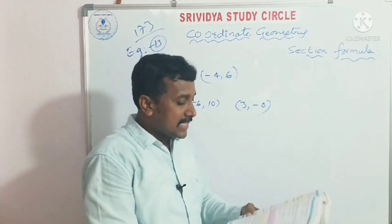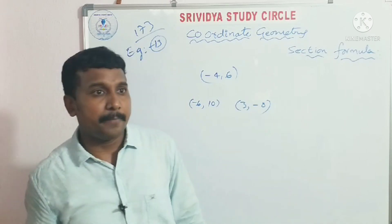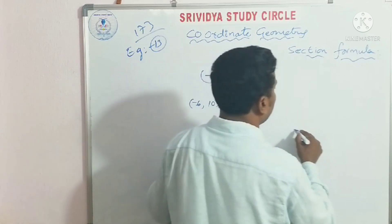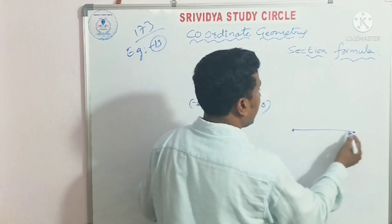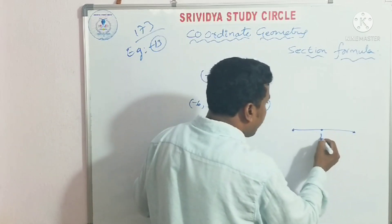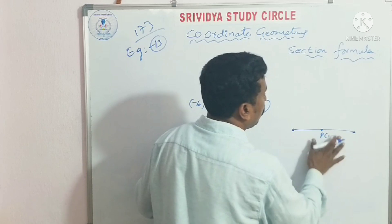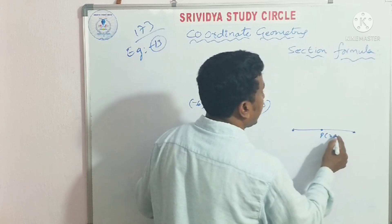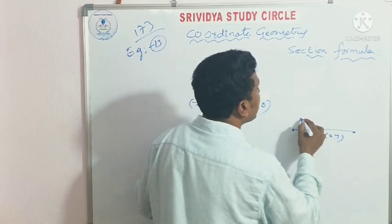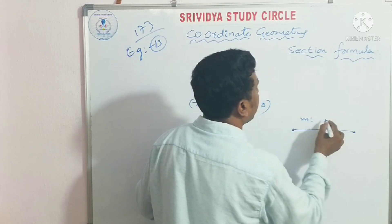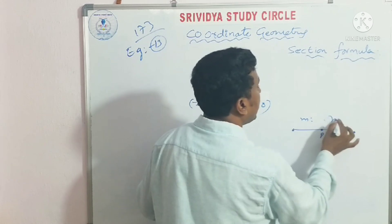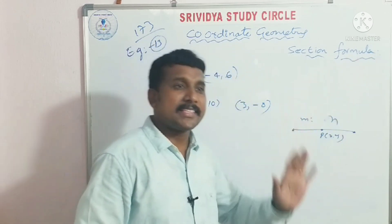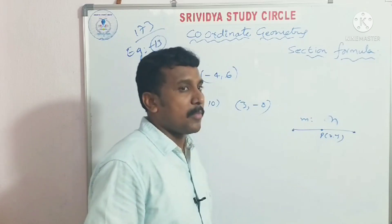He is asking: find that ratio. I have explained the diagram. P(x, y) is the point that divides the line segment. This ratio is key. P(x, y) is equal to the section formula.